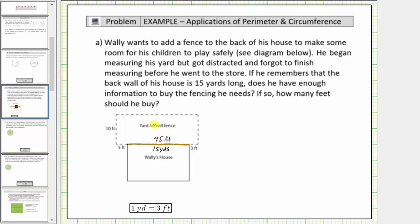If you want to be more formal about this conversion, we can write fifteen yards as a fraction with the denominator of one, and then multiply by a unit fraction to convert the units from yards to feet. Because one yard is equal to three feet, we can form two unit fractions, either one yard over three feet, or three feet over one yard.